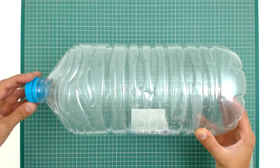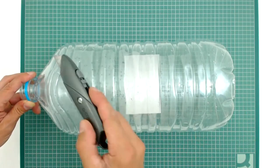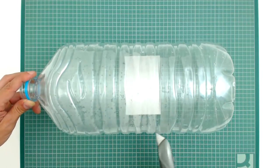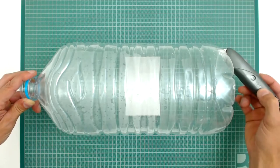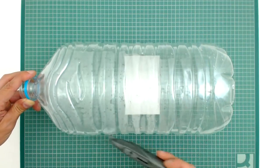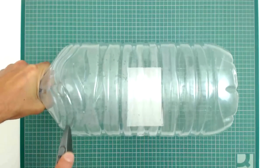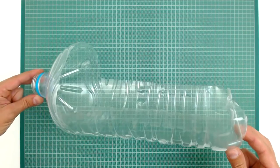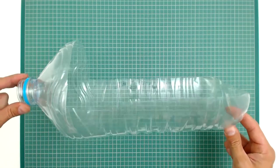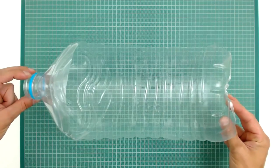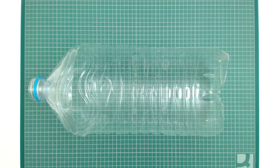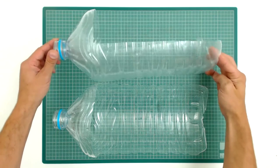To start, take off the cap of the water bottles. Use the cutter to cut half of the bottle as shown in the video. This is how it should look like. Repeat the process with the other bottle, and this is how they both should look like.